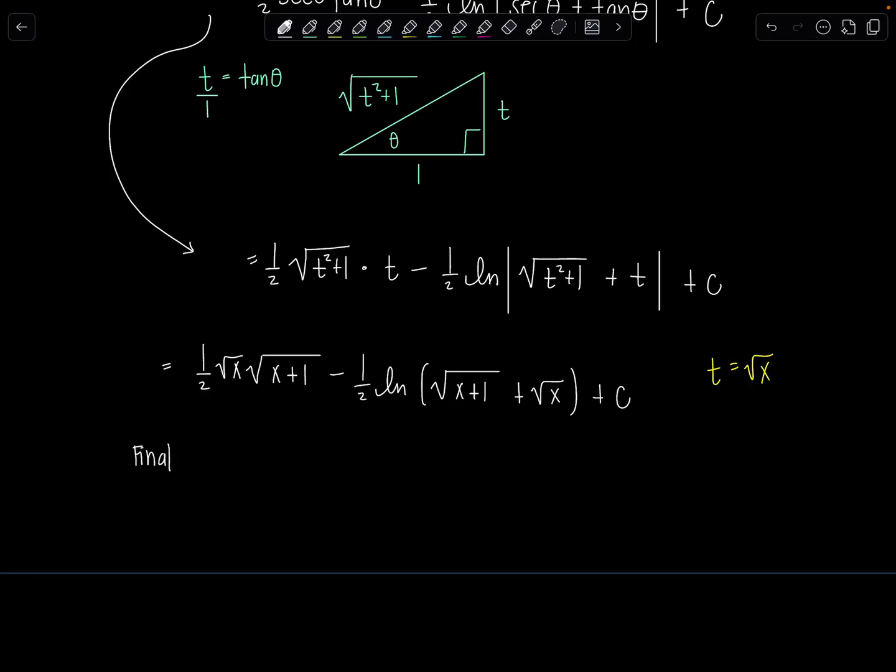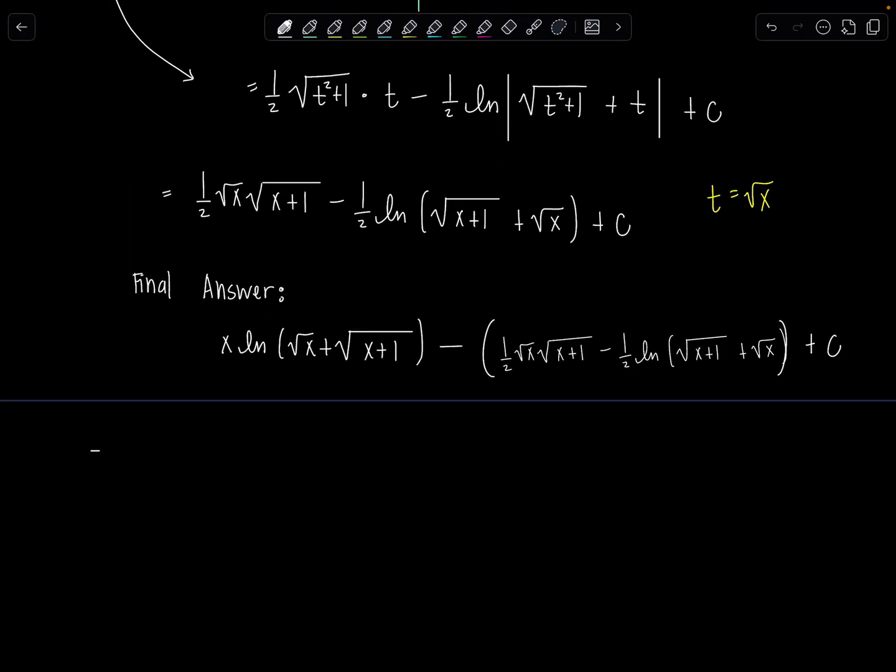And then remember this was from biparts so this was the integral, the integral of vdu that we had to do. So now for our final answer we had uv so x ln rad x plus rad x plus one minus minus this anti-derivative which I'm just gonna copy. And then we can put it all together distributing the negative and we'll be on our merry little way. x ln rad x plus rad x plus one minus one half rad x rad x plus one plus one half ln of rad x plus one plus rad x plus c.